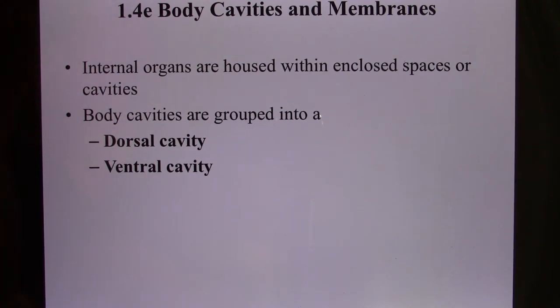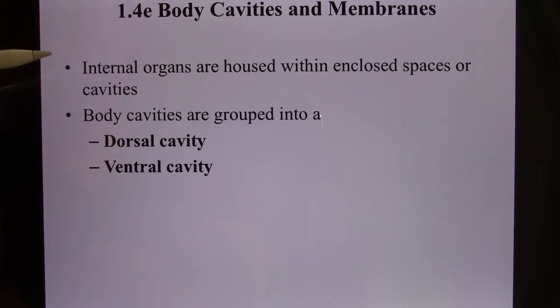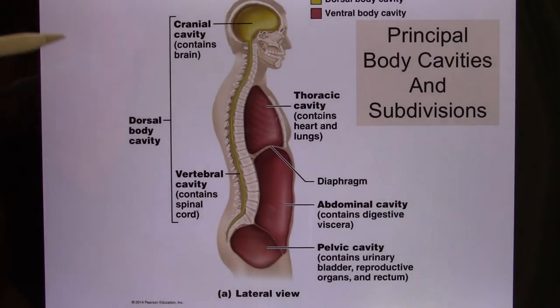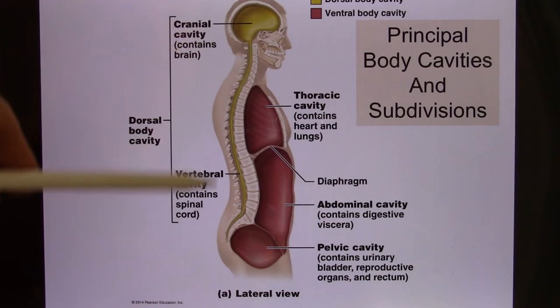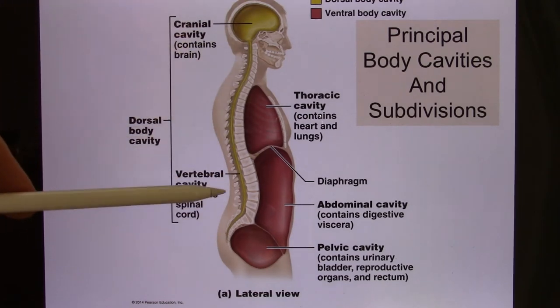Let's look at the body cavity. Your body can be divided into two big cavities: dorsal and ventral. That's the dorsal cavity, and that's the ventral cavity.